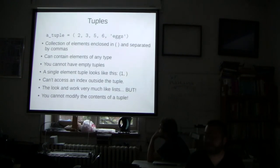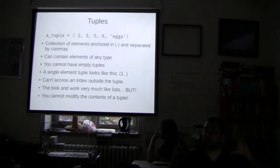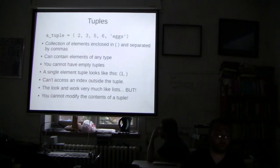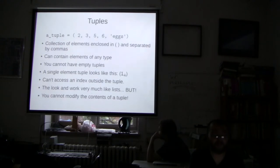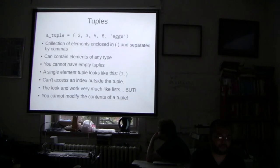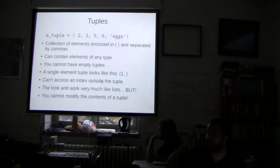Tuples: we've seen these before. A tuple is a collection of elements enclosed in parentheses and separated by commas. It can contain anything. You can't have an empty tuple — that just doesn't work. A single-element tuple looks funny: `(element,)` — you have to have the trailing comma or Python doesn't know it's a tuple. You can't index outside of the tuple just like with a list.